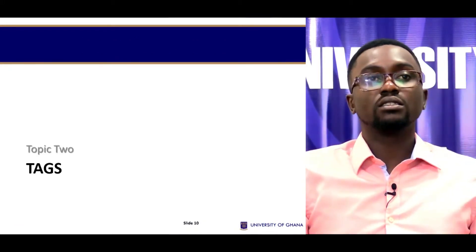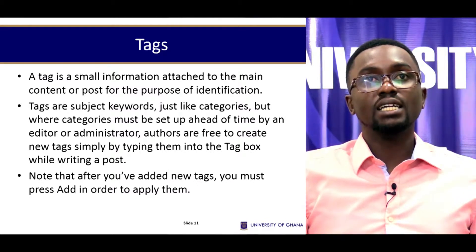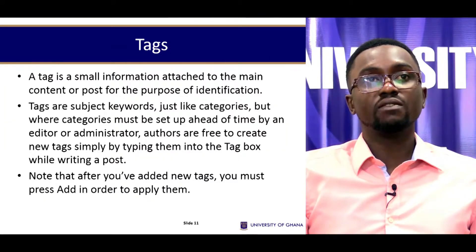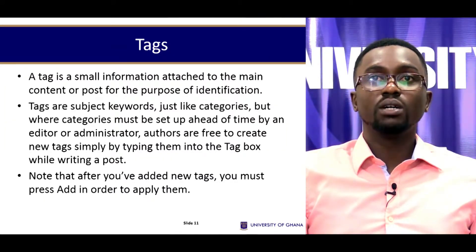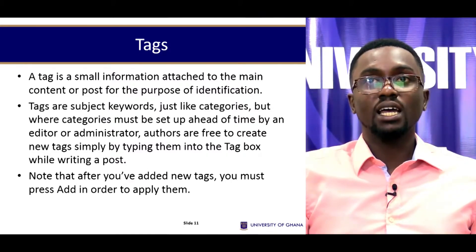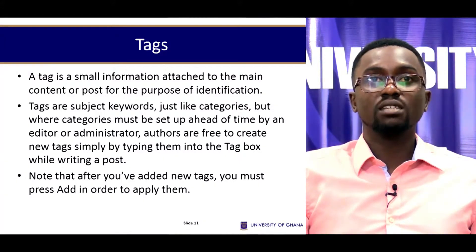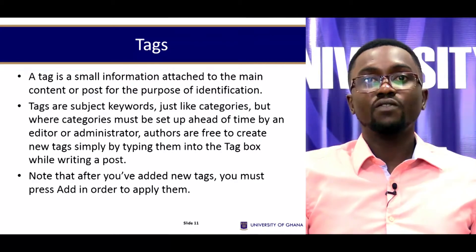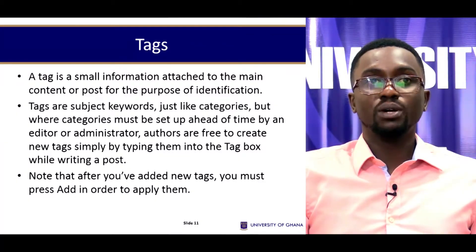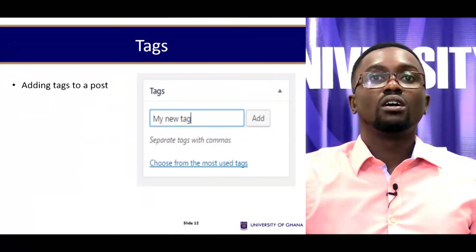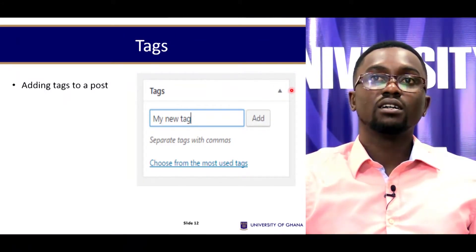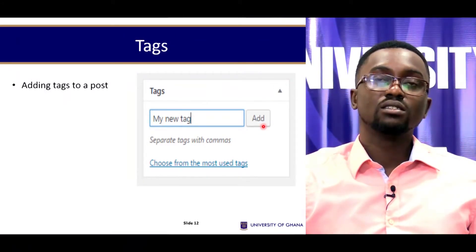Now let's talk about tags. A tag is a small piece of information attached to the main content or post for the purpose of identification. Tags are subject keywords, just like categories, but where categories must be set up ahead of time by an editor or administrator, authors are free to create new tags simply by typing them in a tag box while writing the post. Note that after you've added new tags, you must press Add in order to apply them. After entering the tag, you click Add to apply it.